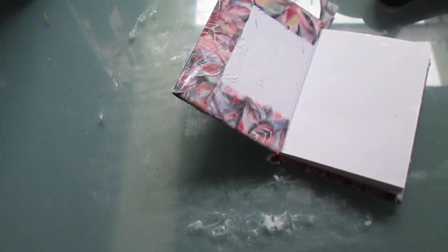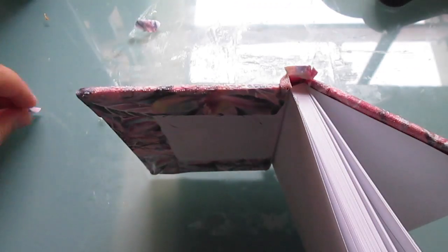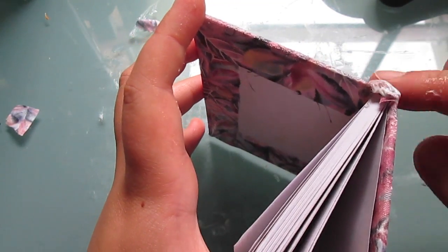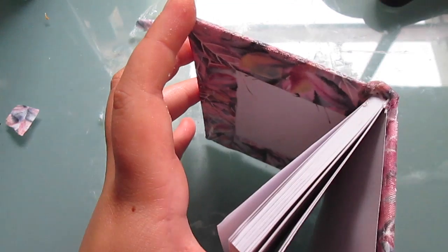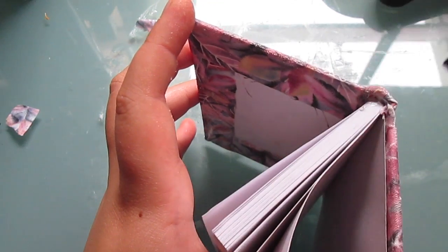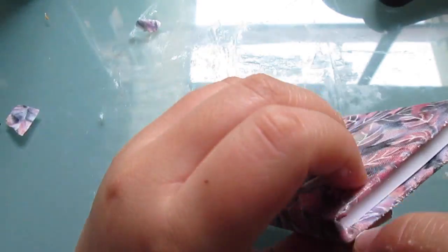Once you've done that to all sides of the book, all we have left to do is cut off the fabric around the spine. As you can see, just apply a little bit more Mod Podge and use your finger or a tool to push the edge of the fabric right in.